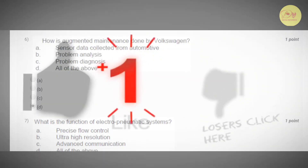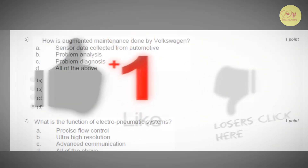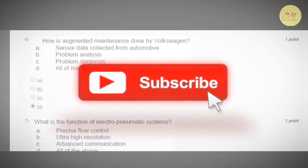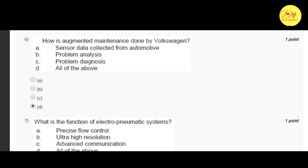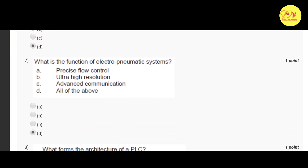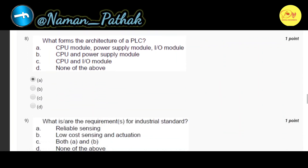Our sixth question is: how is augmented maintenance done by Volkswagen? The correct option is D, all of the above — that is precise flow control, ultra high resolution, and advanced communication. Our next question is: what forms the architecture of a PLC?